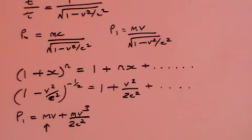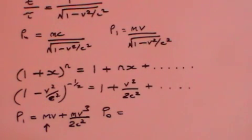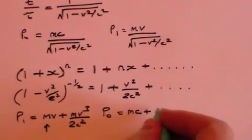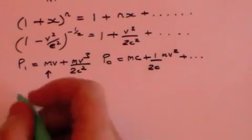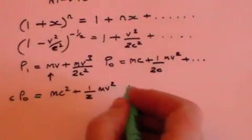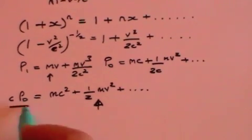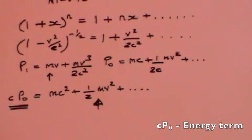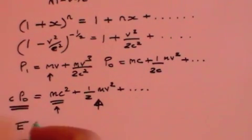What about P0, the first term of the four-momentum vector? That is mc divided by the square root of 1 minus v squared over c squared, which using the expansion is mc plus 1 over 2c times mv squared, plus higher-order terms we can ignore. Multiplying both sides by c, we get cP0 equals mc squared plus one-half mv squared. We recognize one-half mv squared as the kinetic energy term. So cP0 must be an energy term. And mc squared must be the energy you have even when you have no kinetic energy — the rest mass energy. That is the famous equation, E equals mc squared.